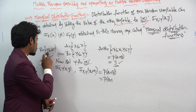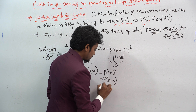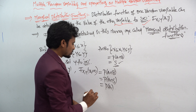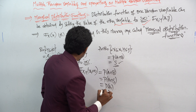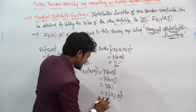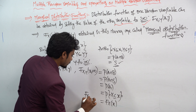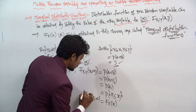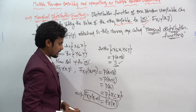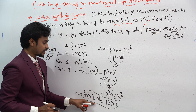So the probability of A intersection B, where B is the sample space, simplifies to the probability of A. Probability of A means P(X ≤ x), which is Fx(x). Therefore, F(x, ∞) equals Fx(x). This is one of the key properties of the joint distribution function.